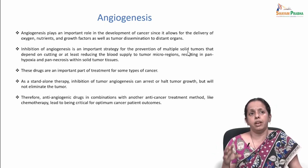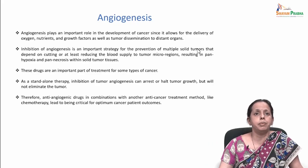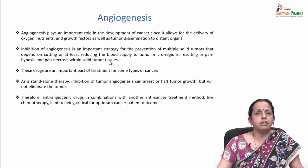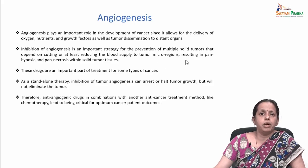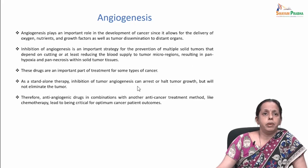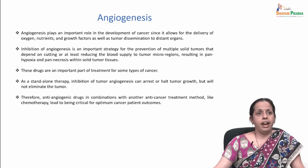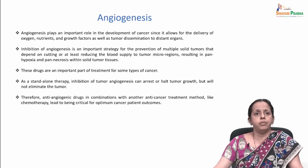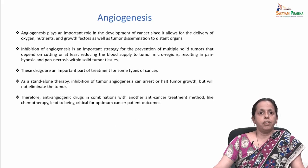If you can inhibit angiogenesis, it is an important strategy for the prevention of multiple solid tumors by cutting or reducing the blood supply to the tumor microenvironment. These drugs are an important part of treatment for some cancer types. As a standalone therapy, anti-angiogenic treatment can arrest or halt growth but may not totally eliminate the tumor. Therefore, anti-angiogenic drugs are always used in combination with another anti-cancer treatment like chemotherapy for better patient outcomes.